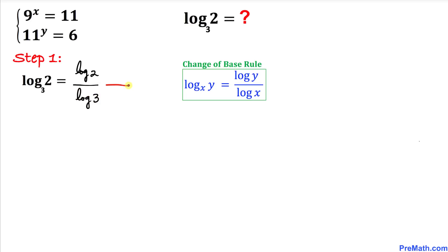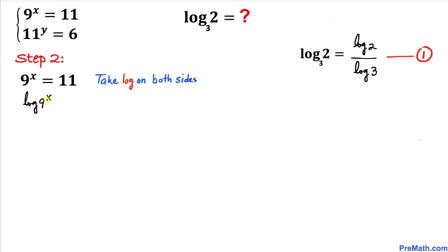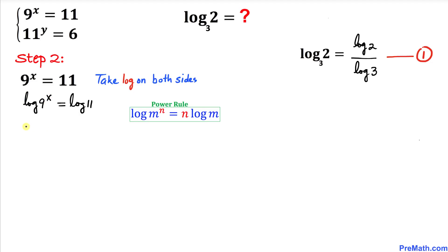Let's call this equation number 1. Now let's focus on the first equation, 9 to the power x equals 11. Taking the log on both sides gives log of 9^x equals log of 11. Applying the power rule, we move the exponent x to the front: x times log of 9 equals log of 11.